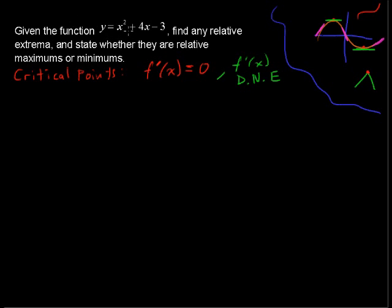Given the function y equals x squared plus 4x minus 3, that is differentiable everywhere, but we are going to find any relative extrema and state whether they are relative maximums or minimums. Let's take the first derivative, y' equals 2x plus 4. Then the next step is to say, when is that first derivative equal to zero? When is the slope equal to zero?